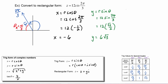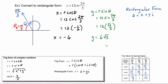We have to put z into rectangular form, which we know will look like z is equal to x plus y times i. Substituting in our value of x and our value of y, we get z is equal to negative six plus six radical three times i. It's perfectly fine to leave your answer like this, but it's quite customary to write it as z is equal to negative six plus six i radical three.